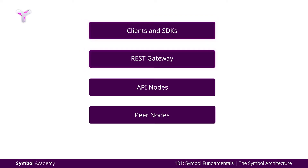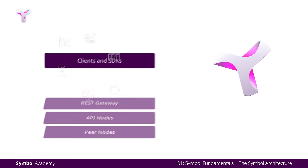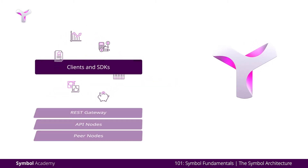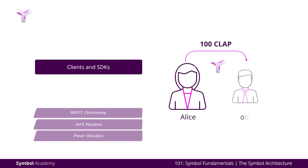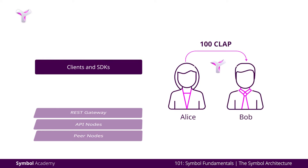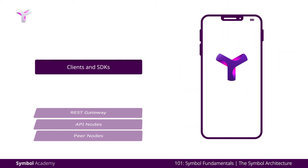To understand the four-tiered architecture, let's follow a transaction as it navigates its way through all four tiers. Let's start with the tier consisting of apps and resource-efficient clients. Let's imagine that Alice wants to send 100 digital claps to Bob over the Symbol platform. She grabs her phone and opens up a Symbol wallet app to enter the following data.